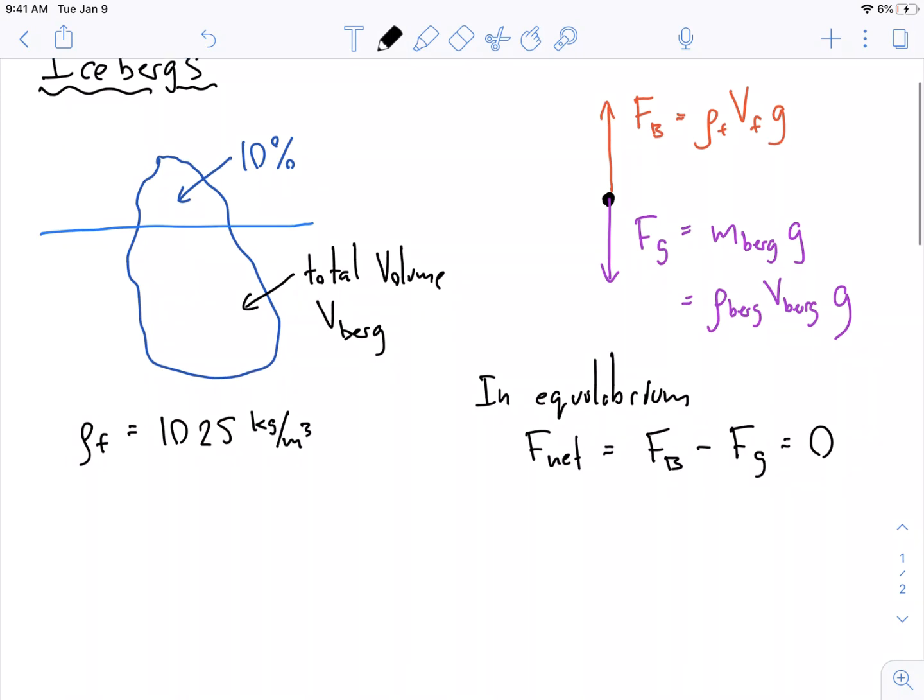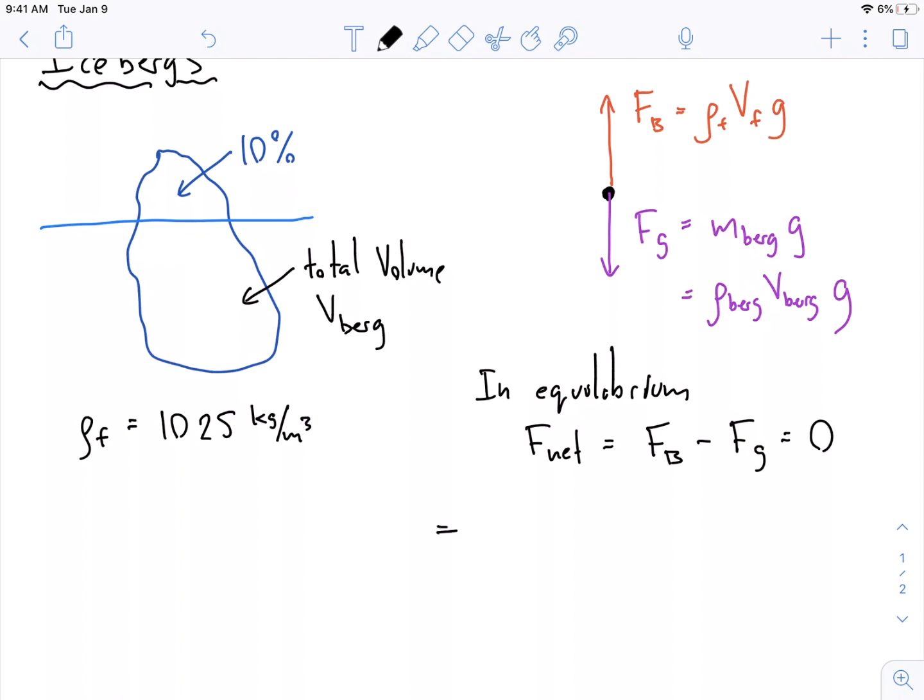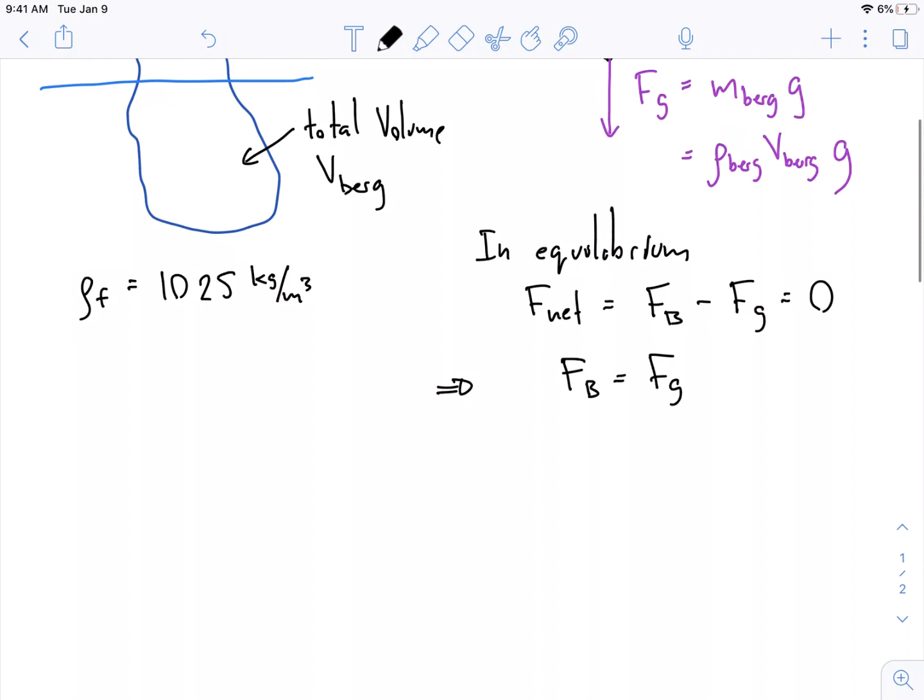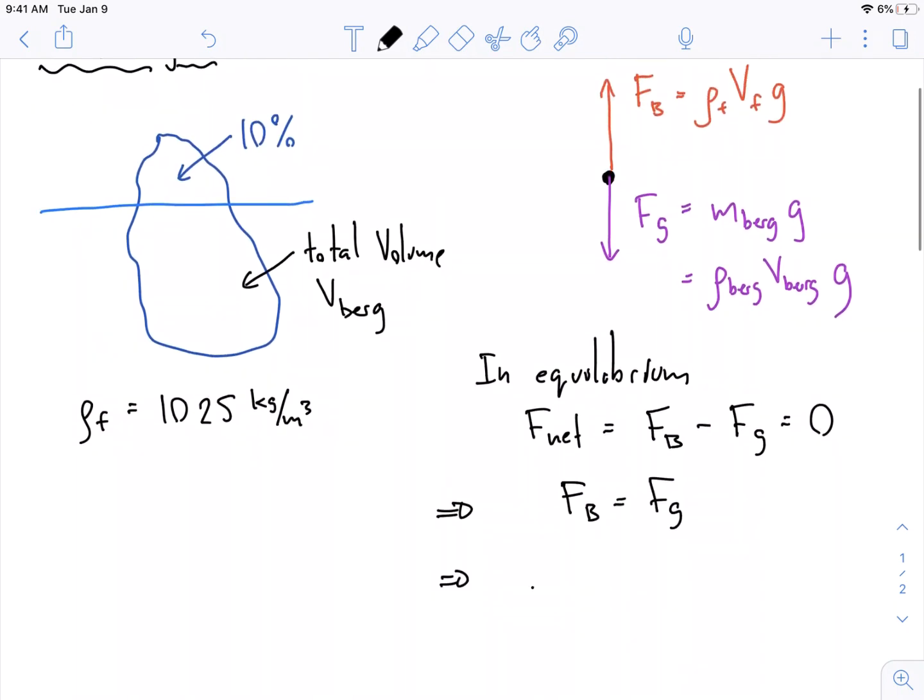And so we can rearrange this to get an equation for ourselves which is Fb is equal to Fg, which is equal to, if we look, what's Fb? Well, it's rho-f times Vf times g is equal to Vberg, or the density of the iceberg times volume of the iceberg times g.